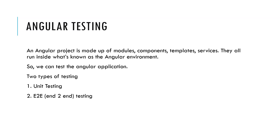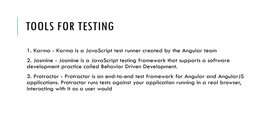What are the different types of testing we can do in Angular? An Angular project is made of modules, components, templates, and services, all running inside what is known as the Angular environment. We can test an Angular application in two ways: unit testing or end-to-end testing. The tools for testing include Karma for unit testing, and Jasmine and Protractor.